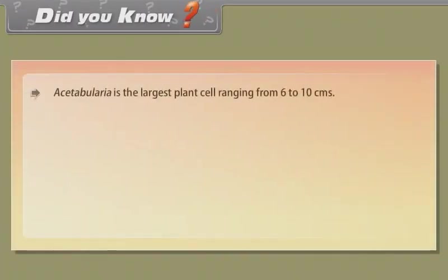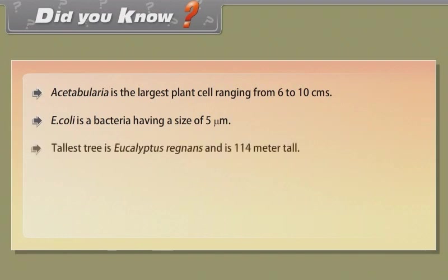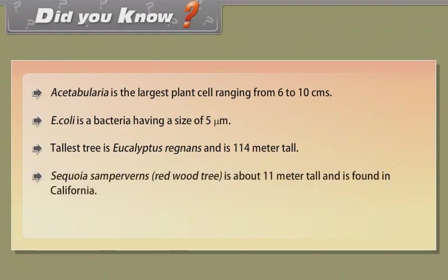Did you know? Acetabularia is the largest plant cell, ranging from 6 to 10 centimeters. E. coli is a bacterium having a size of 5 micrometers. The tallest tree is Eucalyptus regnans and is 114 meters tall. E. coli is the largest land animal.